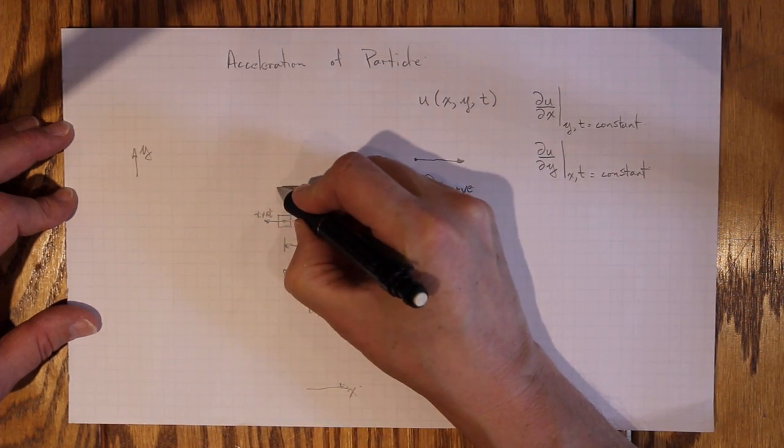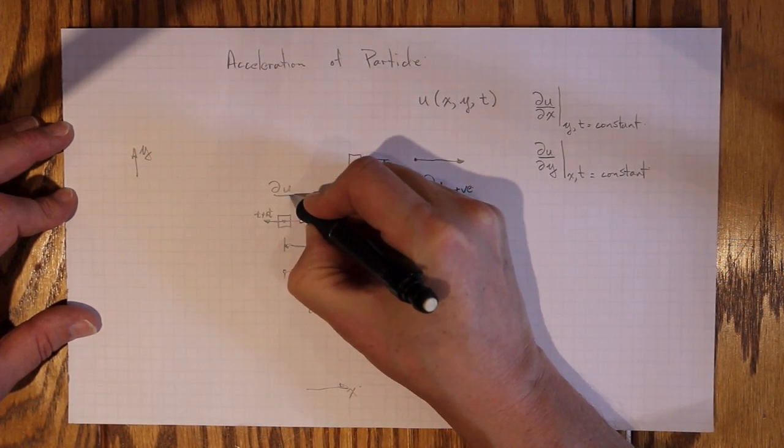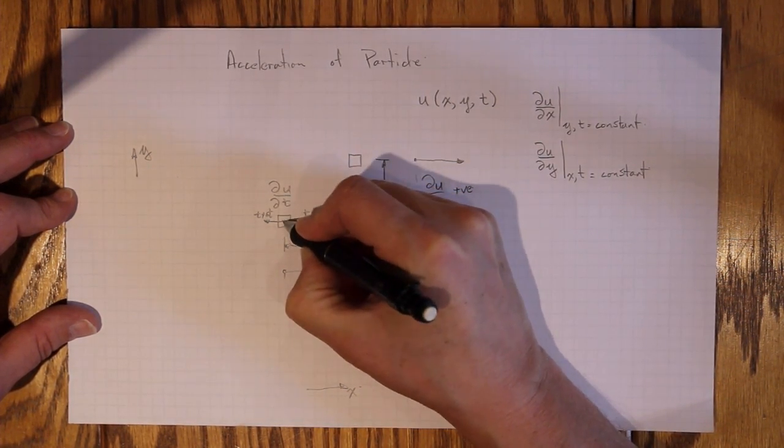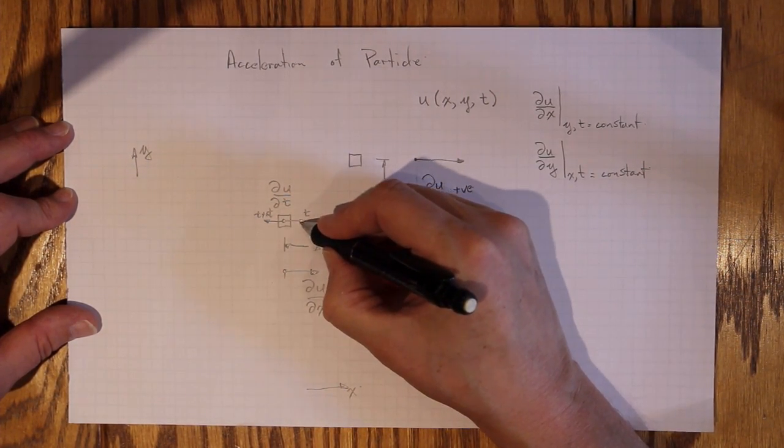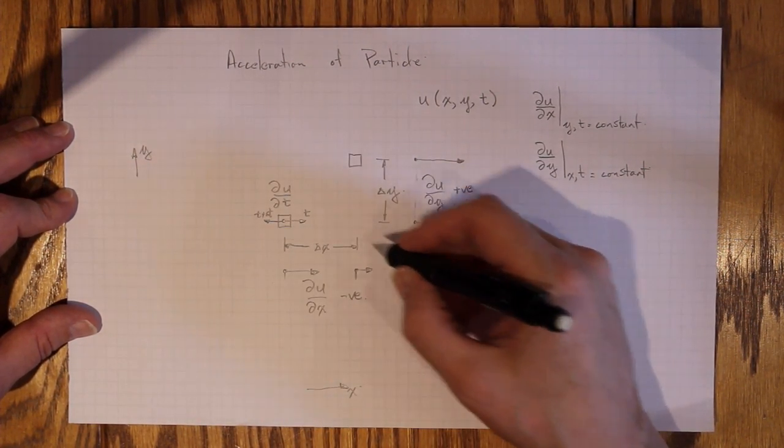and that would correspond to ∂u/∂t right here at this spot, being negative. It went from a positive velocity to a negative velocity in the x direction.